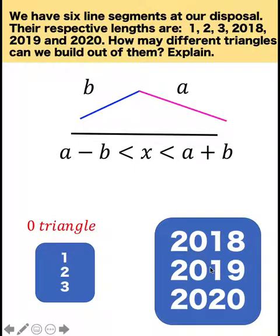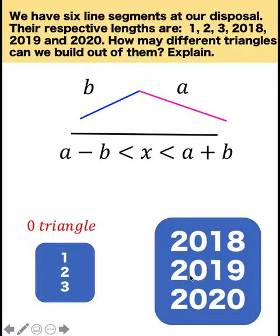Now let's go to the other group with sides 2018, 2019, and 2020. Get the sum of any two sides — is it greater than the third side? Yes, definitely. There is no problem with the right side of this inequality. How about subtraction? If we subtract any two, the result is less than the remaining side. So there is no violation. That means we can form one triangle given these three long sides.